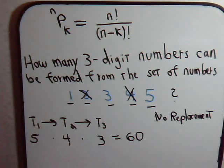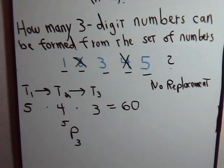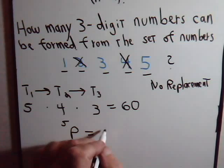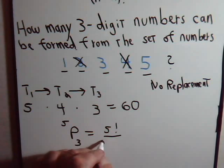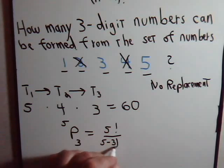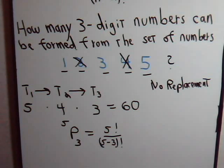Here's our general formula. So here, if we just applied the formula, we would say it's five numbers. We're going to select three of them. So this would be equal to five factorial divided by five minus three factorial.